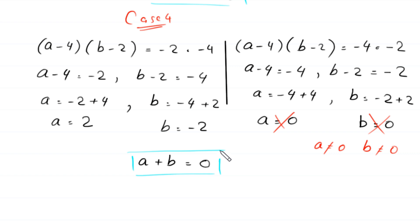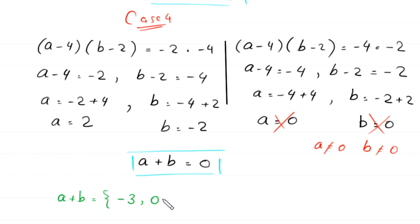So the final set of solutions for a plus b is equal to negative 3, 0, 12, and 15. These are the four solutions of this equation.